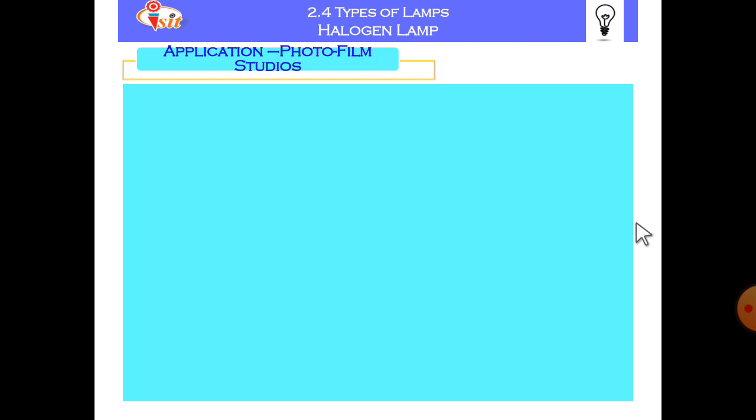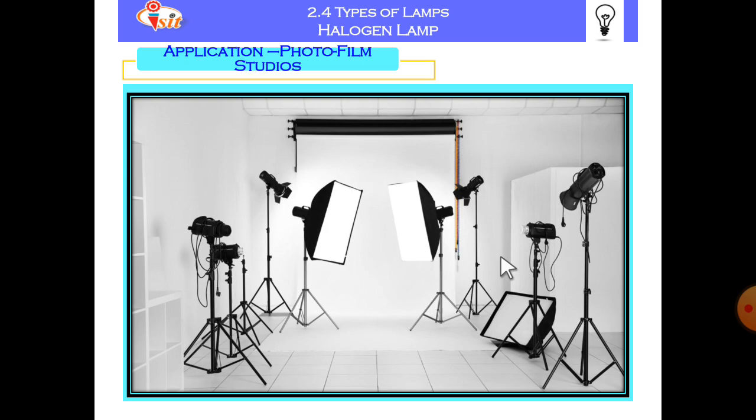Now the application on photo or film studios. So here different types of umbrellas as reflectors which are used to create various shapes or shadows with the help of halogen lamps. So this kind of various structures or various stands are shown to create visible effects, to create very beautiful pictures. So for that purpose, various umbrellas, various shaped umbrellas are used to create various shadows.